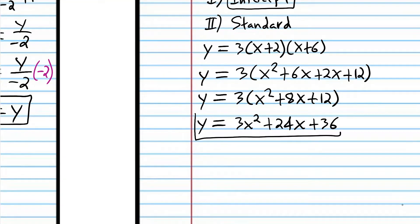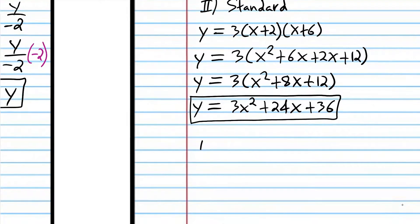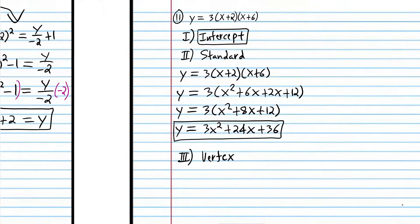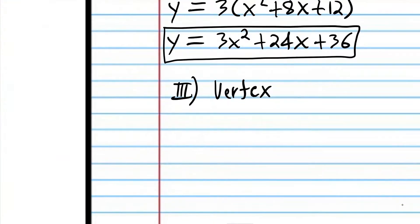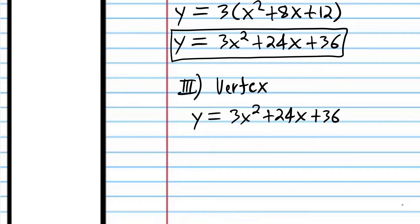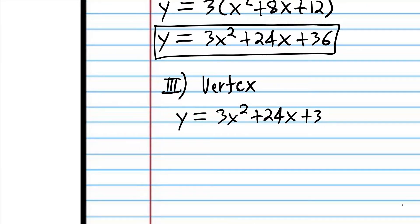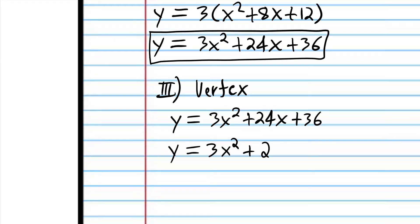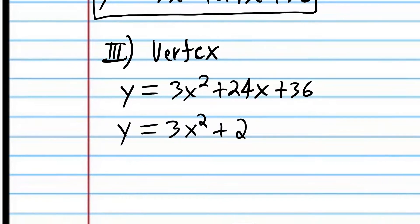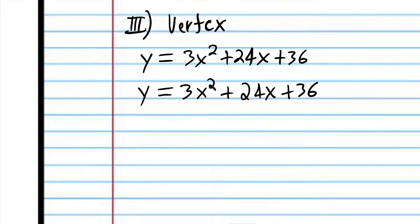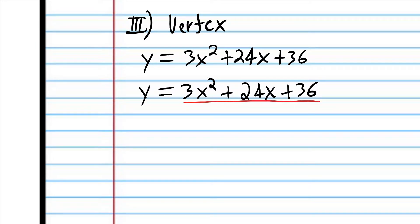Now we're going to convert to vertex form — the step that requires quite a bit of calculation. To convert to vertex form, we start with standard form. We have to complete the square, but we can't do that with a coefficient on the x squared term. So we're going to divide both sides by 3 to get rid of it.